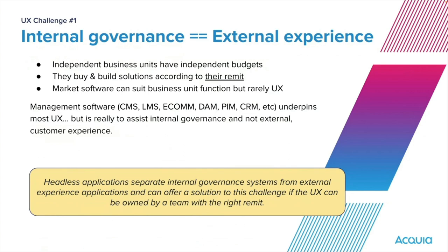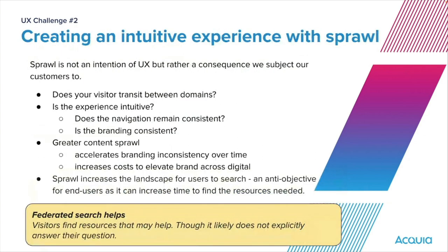Headless applications have provided an option to get around this, because you can create a headless front-end with multiple back-ends to manage that content. However, that only really works if you have a business unit focused on a unified front-end — it won't work if each business unit is still delivering within their own remit, because they're not going to create the holistic journey. Challenge number two is creating an intuitive experience with sprawl — it's a pointless statement because sprawl is not intentional UX design. Sending users to another subdomain isn't a good idea; it's just a consequence of having lots of different properties.